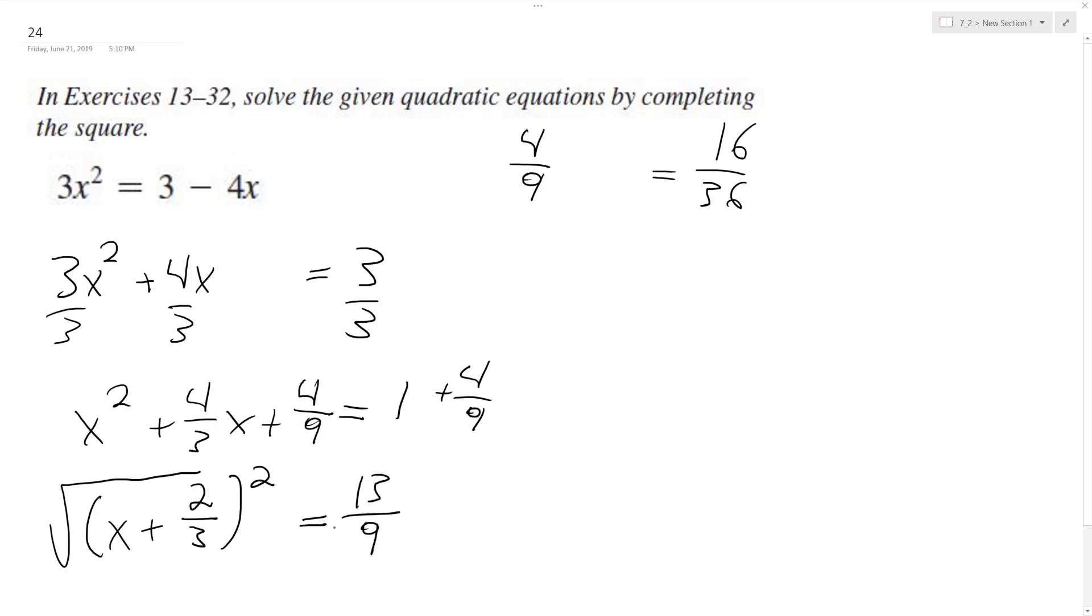Take the square root of both sides. And what we end up with is x plus 2 thirds equals plus or minus the square root of 13 over 9. And finally,